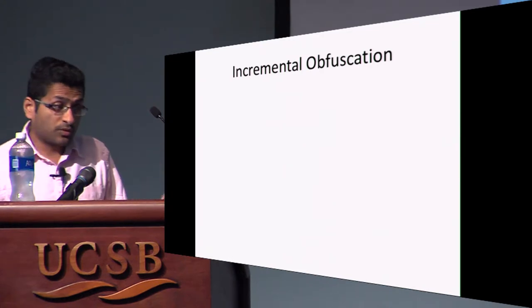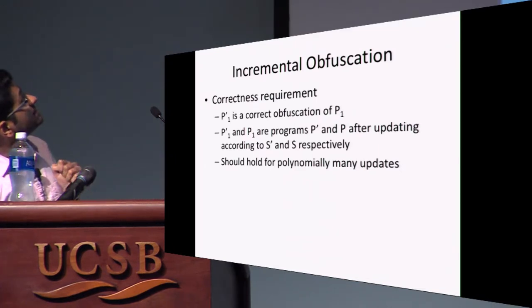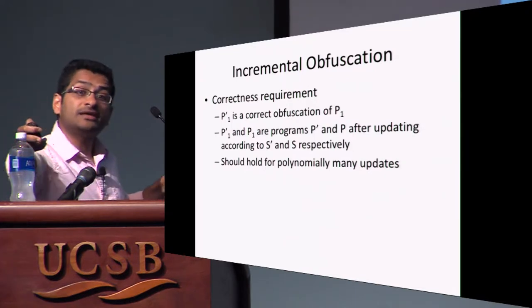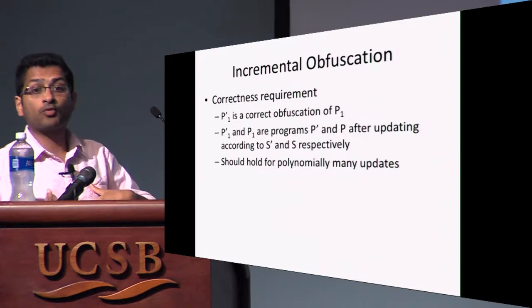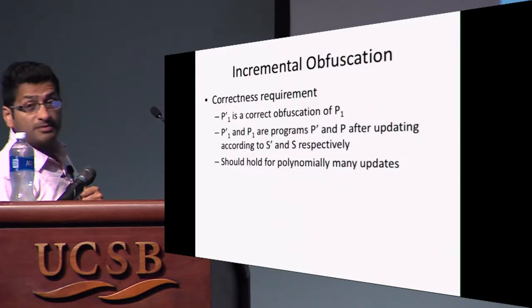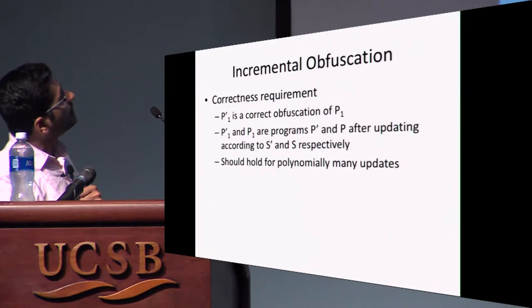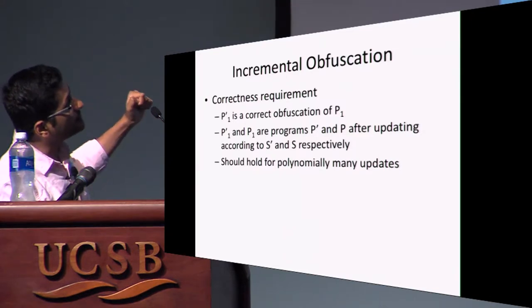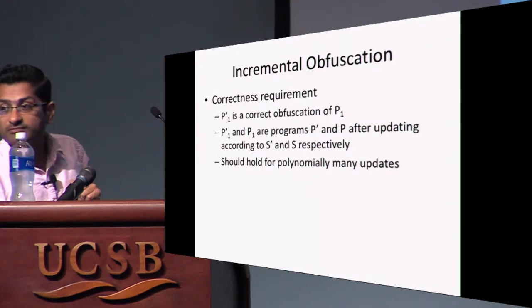The correctness property we want is that the obfuscation P1' — obtained by you applying the update on your obfuscated program — implements the same function as P1, the updated program on my end. So if you have P and P' is the obfuscated version of P, then after applying update S on P you get P1; you compute S' as described and apply it to P' to get P1'. Then this P1' implements the desired function P1.